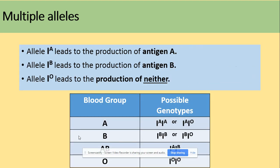So how does it work? Allele I^A leads to the production of antigen A, I^B leads to the production of antigen B, and I^O leads to the production of neither. In terms of blood groups — A, B, AB, or O — those are the possible phenotypes with their genotypes. For group A you can have I^A I^A or I^A I^O. For group AB you've got I^A I^B. And if you've got group O, you've got genotypes with only the I^O symbol.